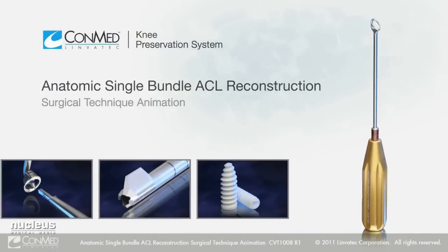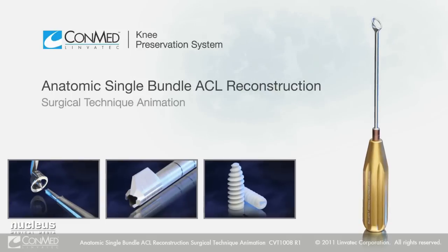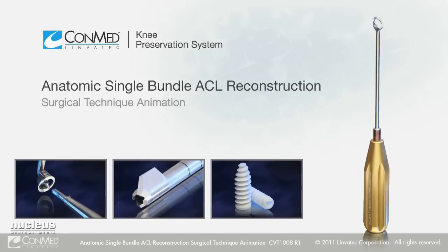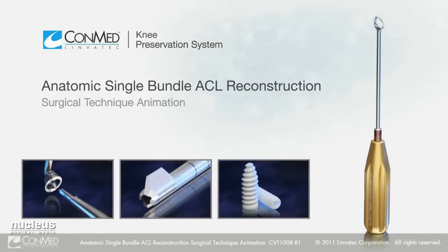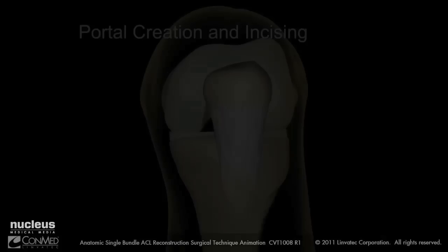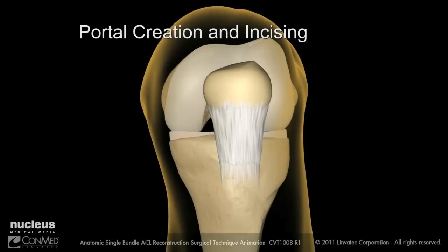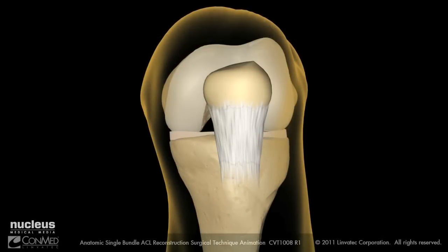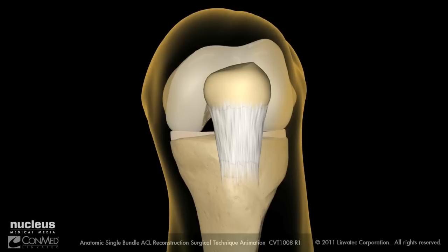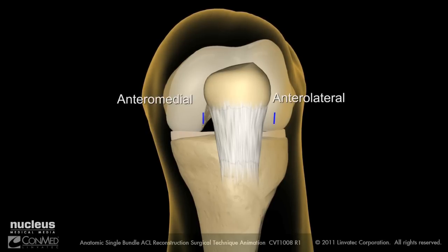Introducing the Anatomic Single Bundle ACL Reconstruction Procedure. The arthroscopic surgical approach for anatomic ACL reconstruction requires three portals: an anterolateral, an anteromedial,